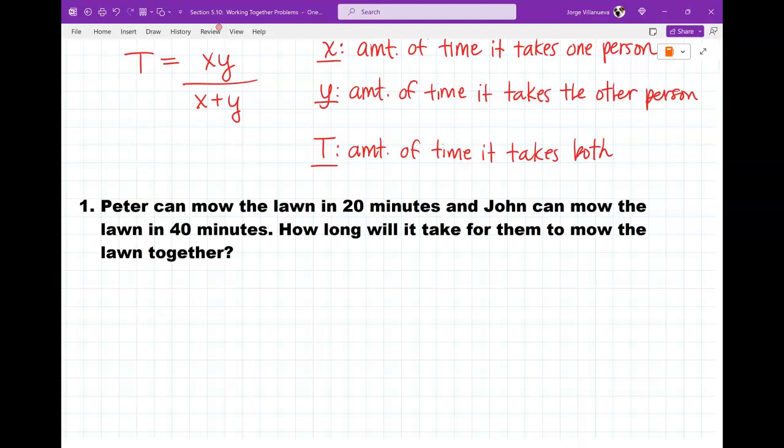So, it takes one person 20 minutes. It takes the other person 40 minutes. How long does it take both of them? So, which variable am I solving for? X, Y, or T? T, right? Because it says together. Both of them. So, I'm solving for T. That means I have to let somebody be X. I got to let somebody be Y. So, let's just let Peter be X, since he's the first person they mentioned.